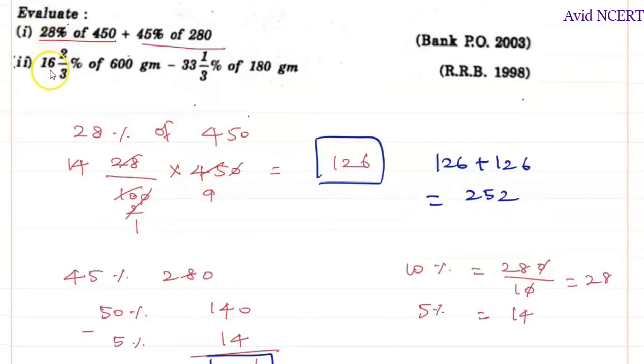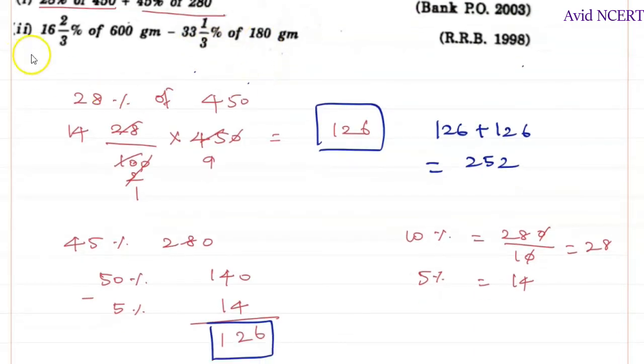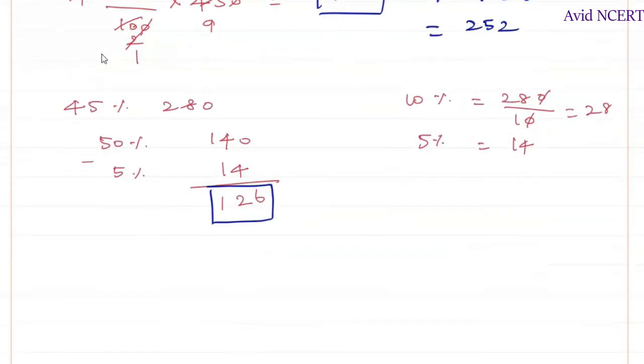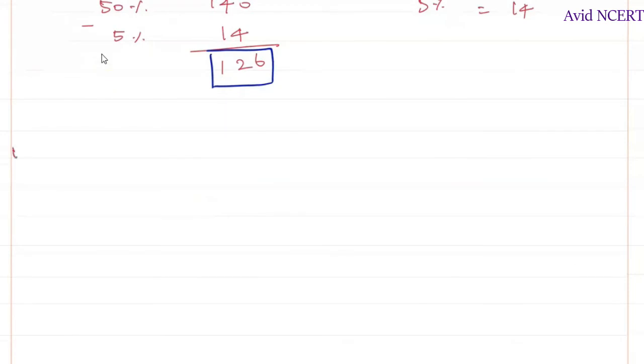Now let's solve for this problem, which is 16 and 2/3 percent of 600 grams minus - whenever they give the unit, make sure you add the units at the end of the answer too - minus 33 and 1/3 percent of 180 grams. First we have to find 16 and 2/3 percent of 600 grams.